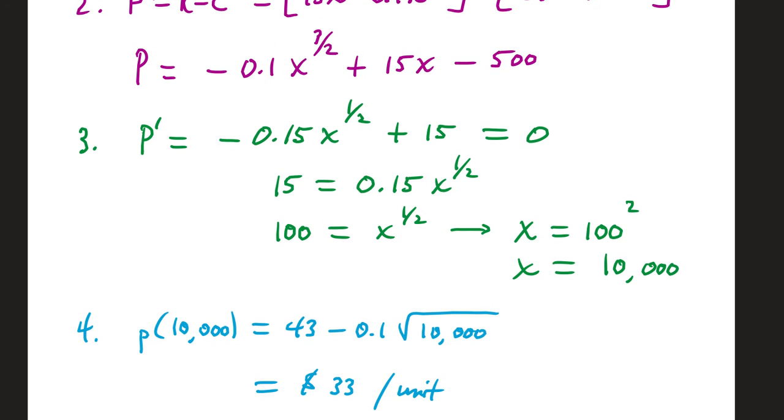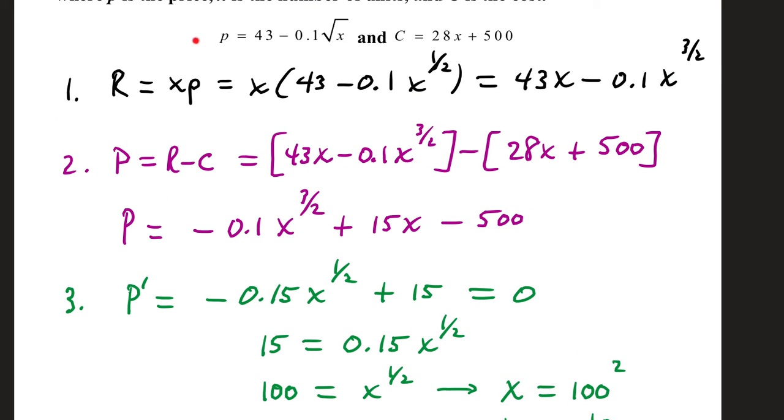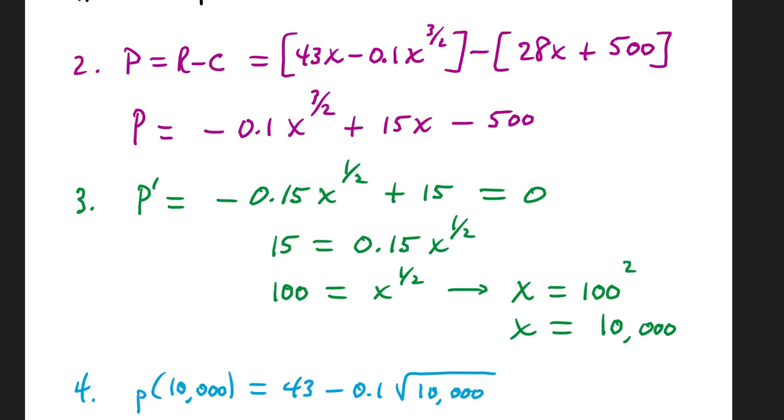Step 4, now that we know the number of units that maximizes profit, we go back to our price function, which is at the top. That's this function that's given first. And we're going to find the price of 10,000 units. So 43 minus 0.1 times the square root of 10,000. That gives us $33 per unit.